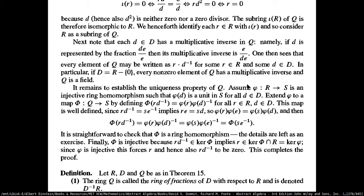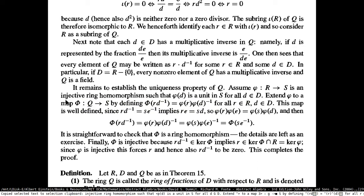This is interesting. You have this homomorphism which gives you units in S for all the elements in D. Then you extend this to a map — uppercase Phi from Q to S — such that it takes every element of Q which can be written as R times D-inverse, and gives you phi of R and phi of D-inverse. So Phi is also a homomorphism. You have to check whether this is well-defined: if R times D-inverse equals S times E-inverse, you have to make sure the structure is consistent.